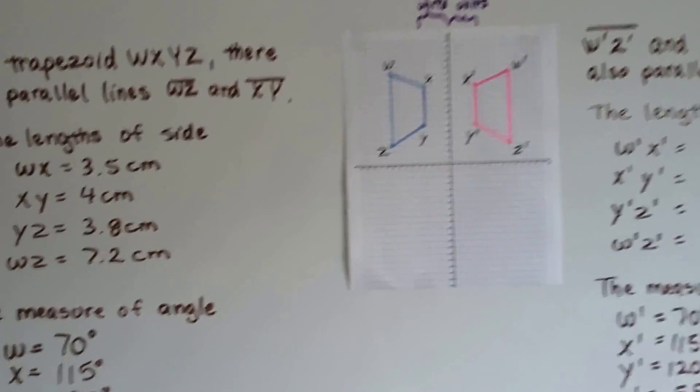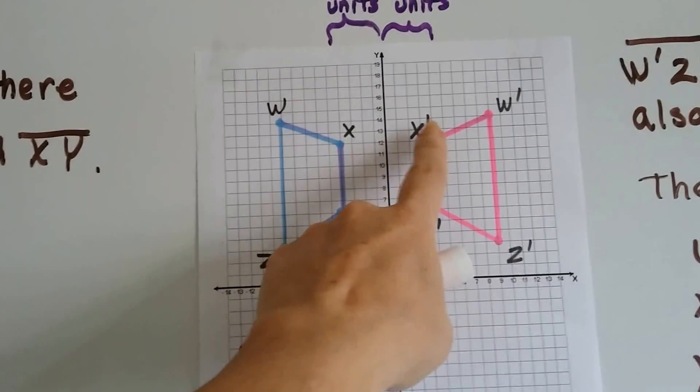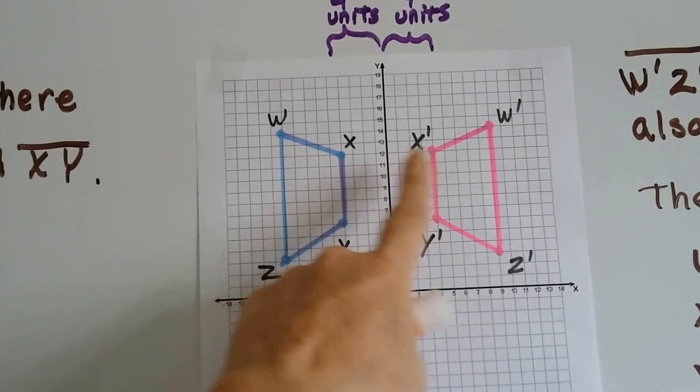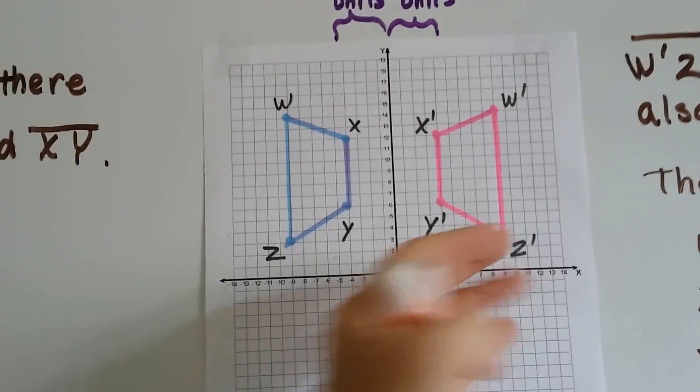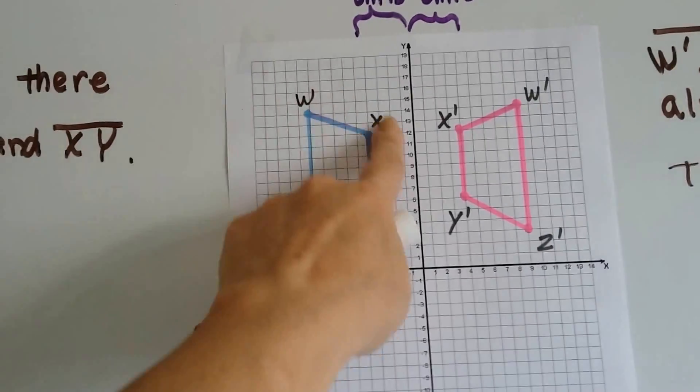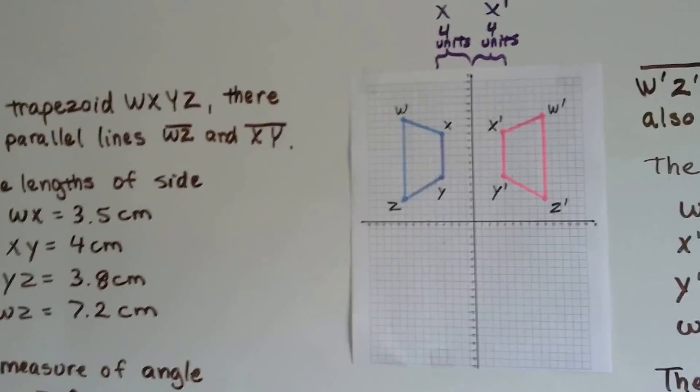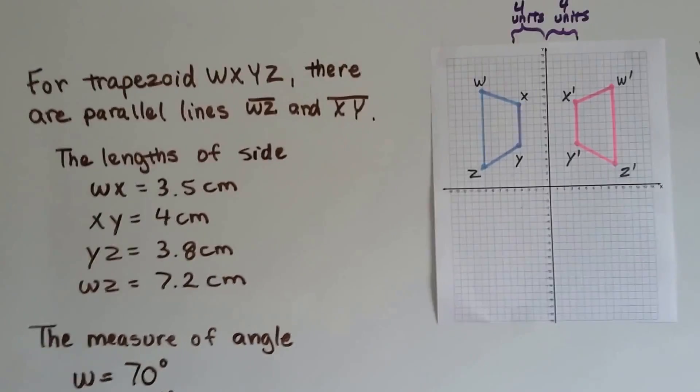So here we've got a trapezoid right here, and we can tell from these little tick marks that this is the image. This is the reflection. It flipped over. So this is the original because it doesn't have any tick marks on the letters. That's how we can tell right away. So for trapezoid W, X, Y, Z, there's parallel lines W, Z and X, Y.